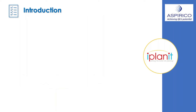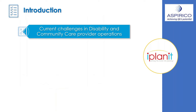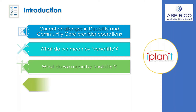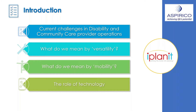A quick introduction to our webinar today — we'll be looking at mobility and versatility: what does it mean? We'll also look at the current challenges within the disability and community care sector, particularly on the operational side and in response to various recent issues. What do we mean by versatility? What do we mean by mobility? And what is the role of technology within all of these — addressing the issues and facilitating some of these ideas and concepts.